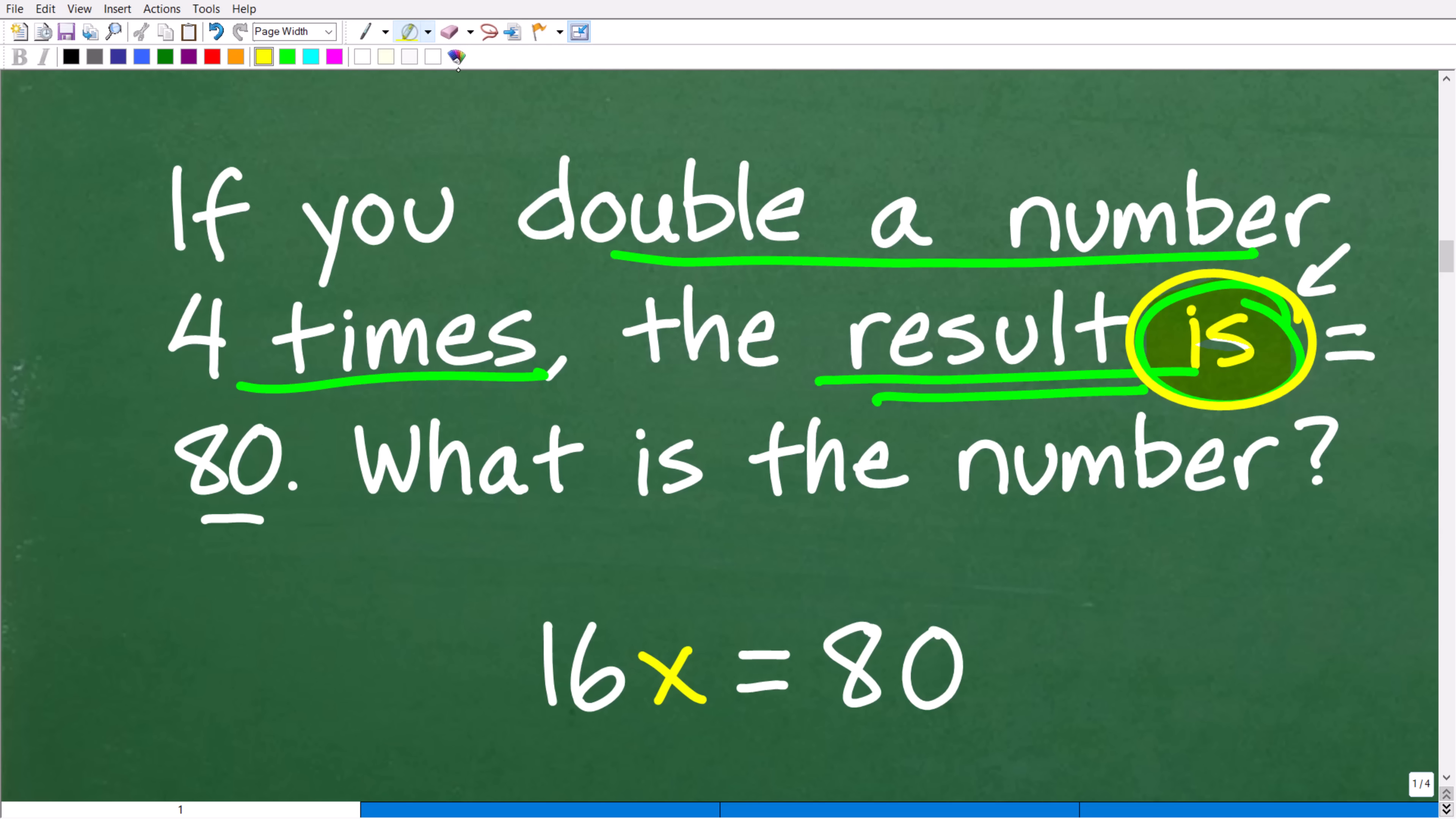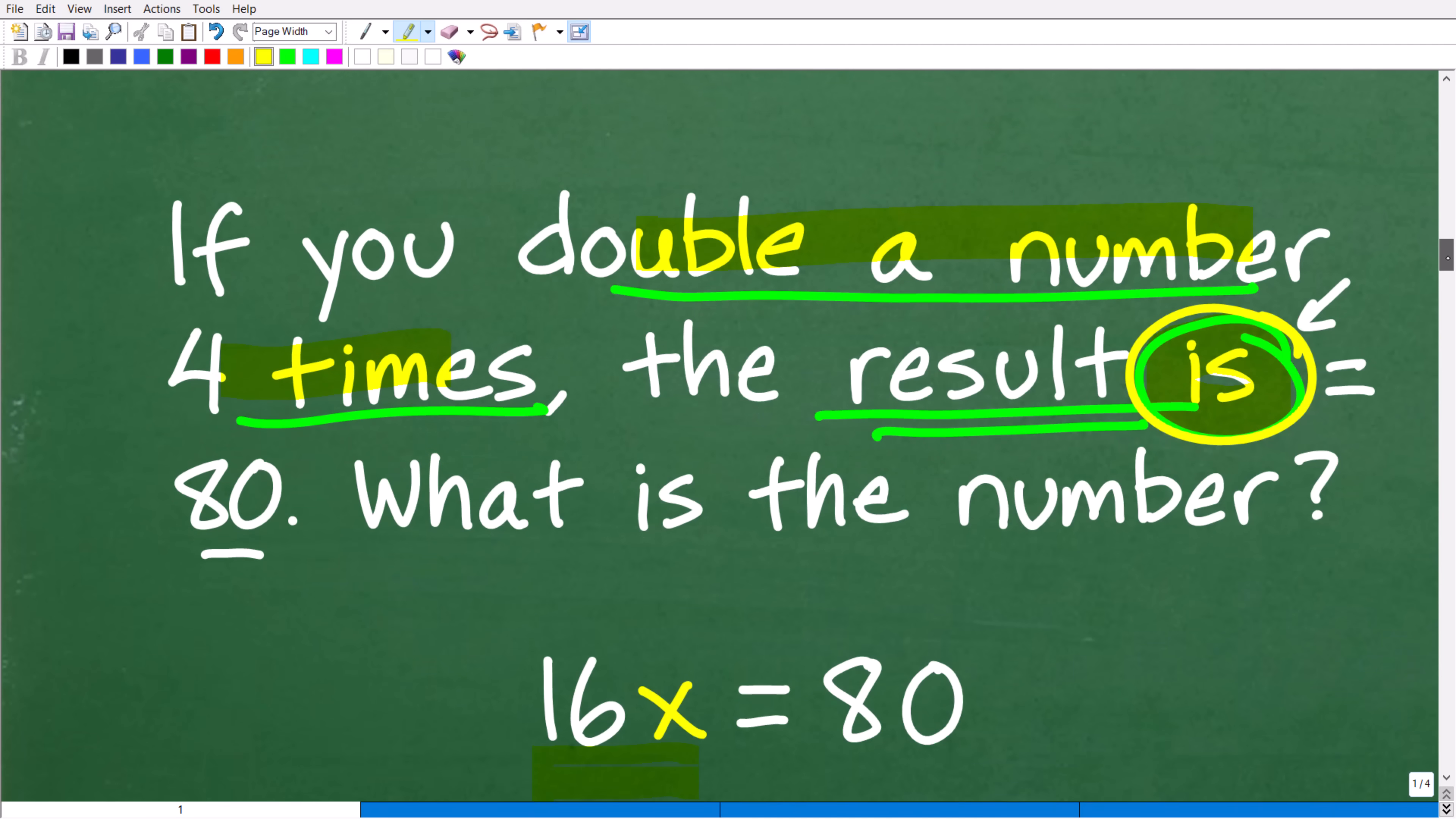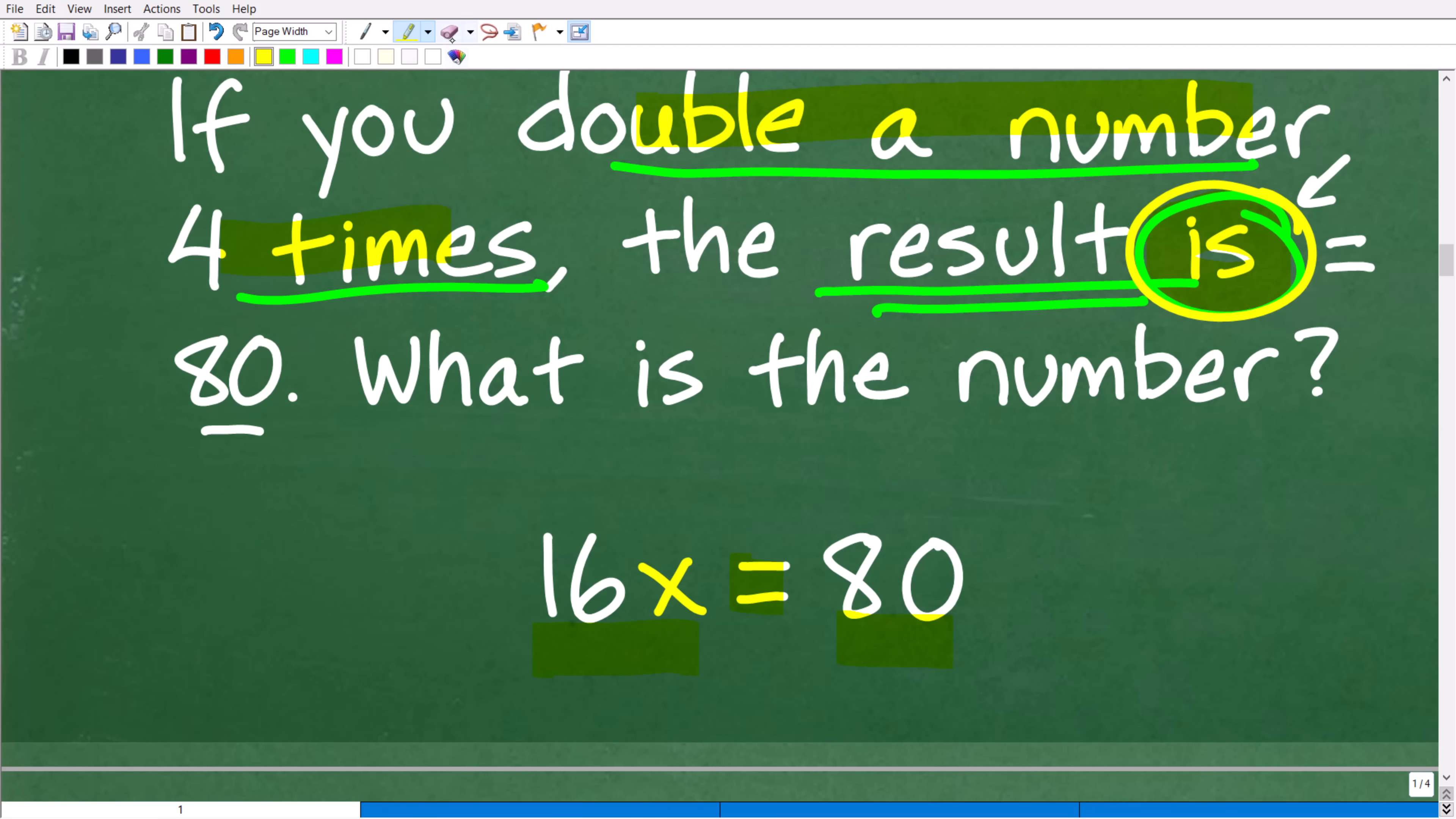Okay. So, we double this number x four times. We got 16x right here, right? So, this is what we got when we double this number four times, 16x. And the result is 80. Okay. So, the next step here is going to be to solve this equation.